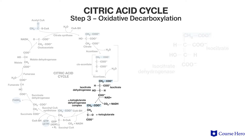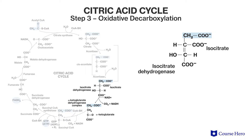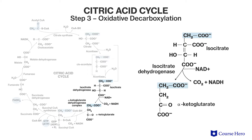Step 3: Isocitrate dehydrogenase oxidizes isocitrate with the help of NAD+, resulting in the production of a five-carbon molecule called alpha-ketoglutarate.